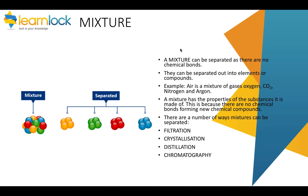For example, air is a mixture of different gases. It contains oxygen, carbon dioxide, nitrogen, and argon. A mixture has the properties of the substances it is made from, because it's not making anything new. Because it's a mixture, the components can be separated.